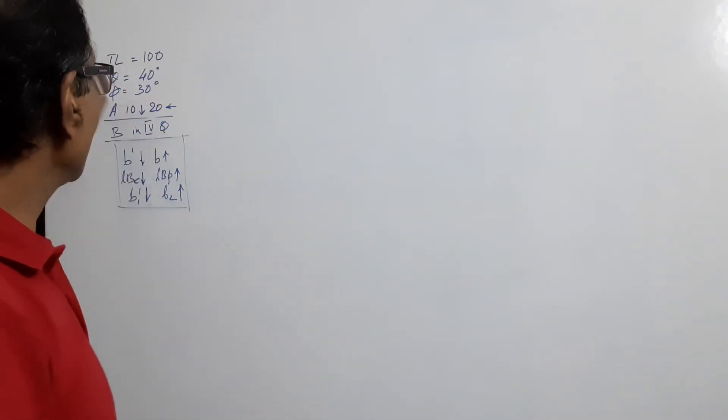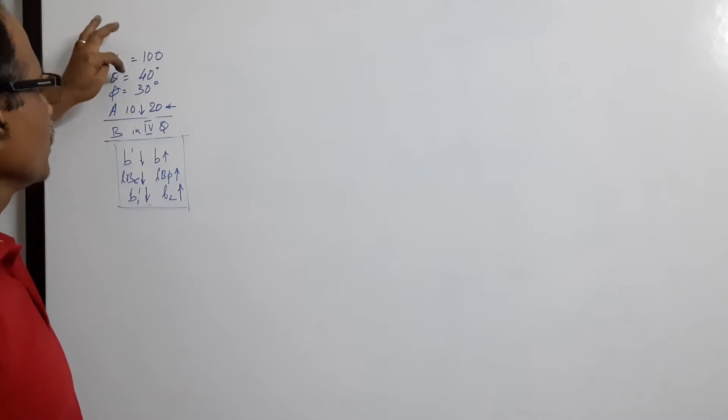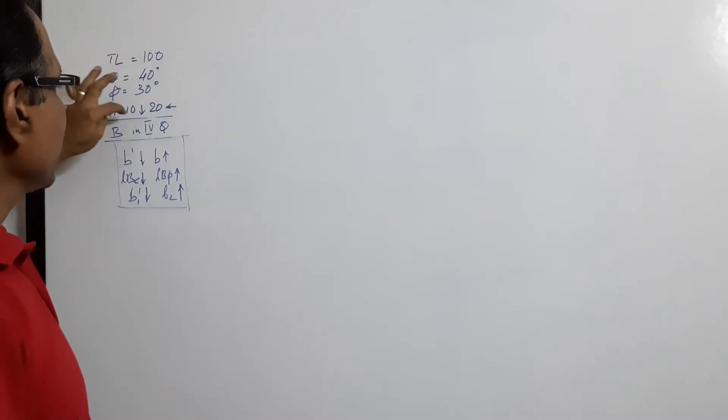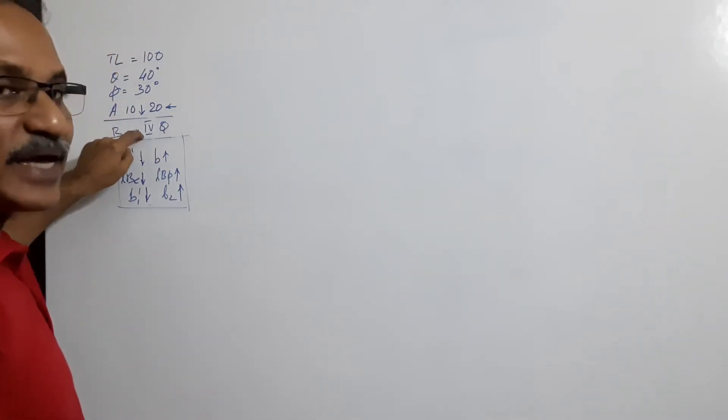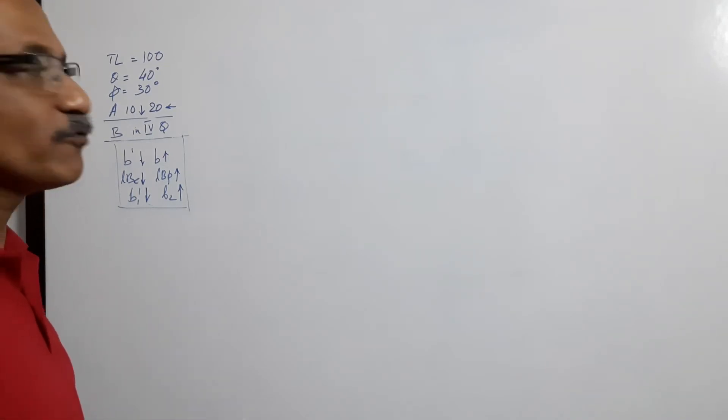Hi again. In this problem we have full length saying theta 40, 5, 30, end A in third quarter and end B in fourth quarter.